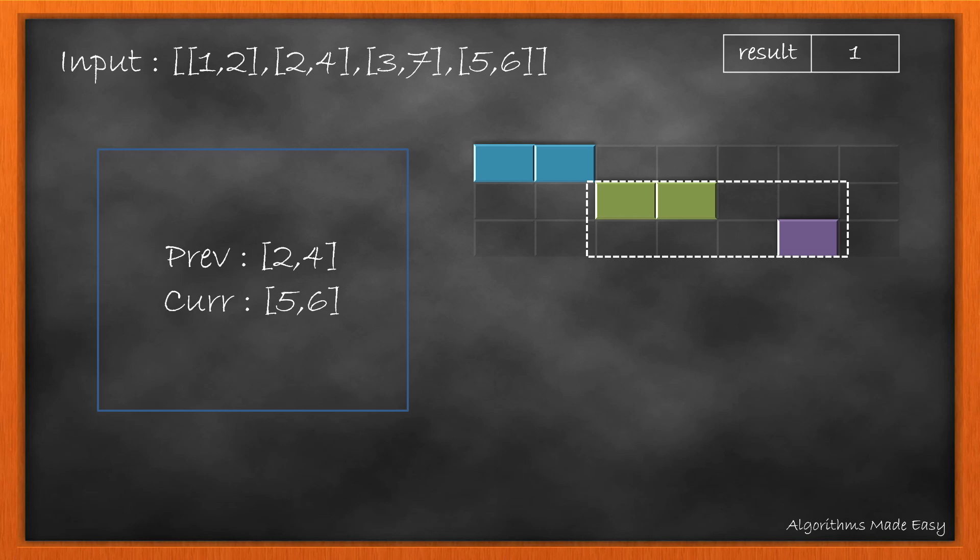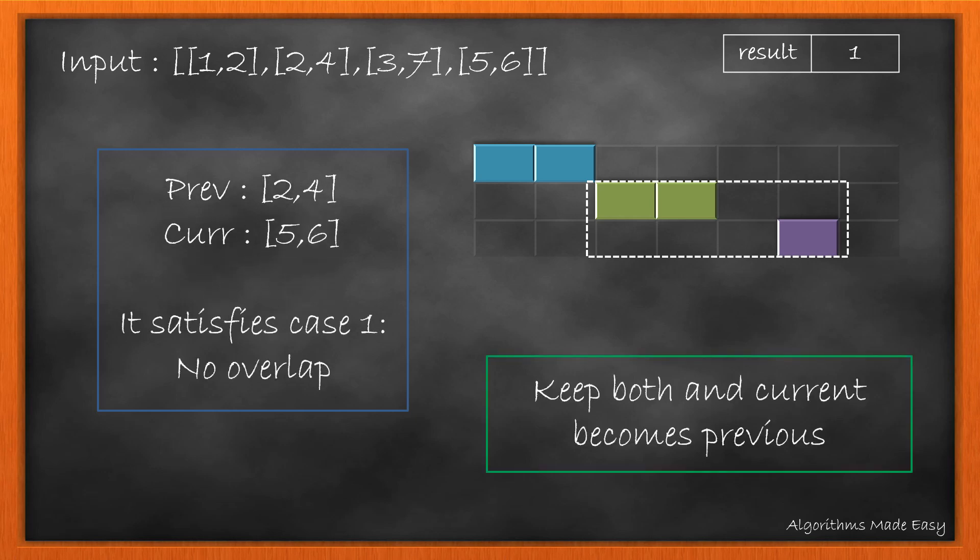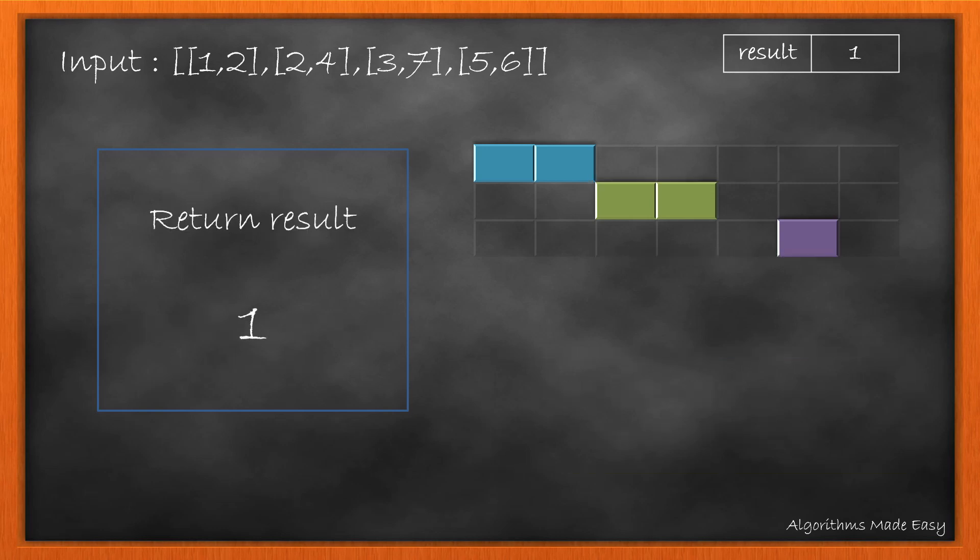Now we come to the last set of points. As this satisfies condition 1 which says no overlap, we keep both the points and the current becomes previous. But as there are no more points left to iterate, we return the result which is 1.